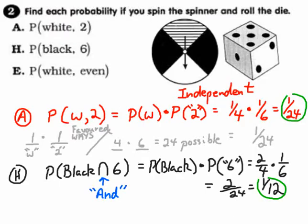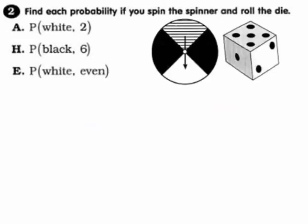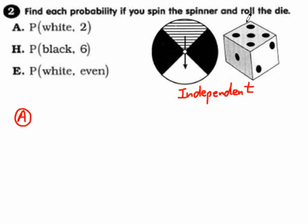That covers perms and combinations. Now let's look at dependent and independent events. Sometimes what you do on the first event affects the second one, and sometimes it does not. For independent events: you're going to spin a spinner and roll a die.